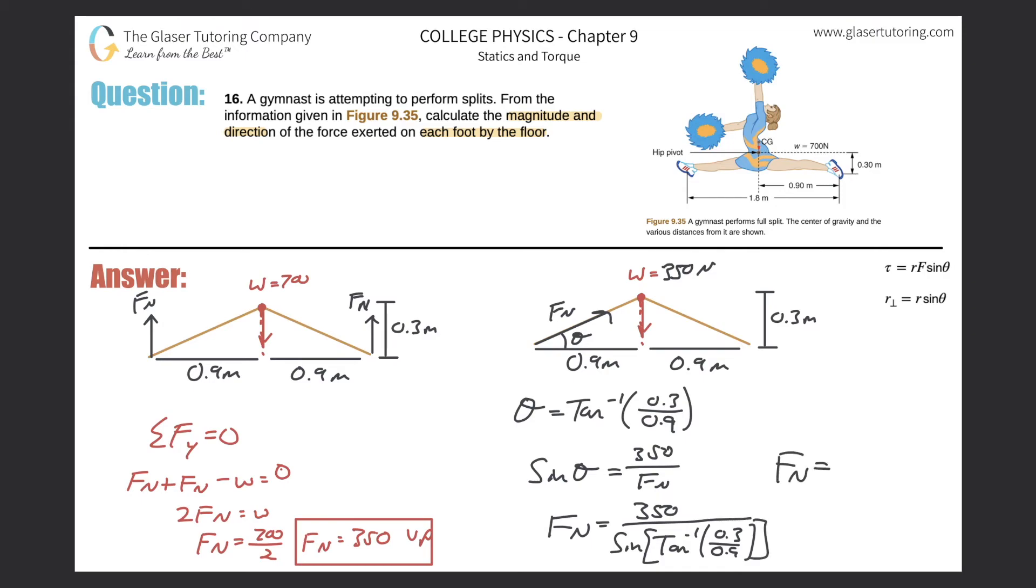And when we do that, we can get our answer there. So let's see what that is now. So that being the case, so we have 350 divided by parentheses, sine, and then of the inverse tangent of 0.3 over 0.9, and we get a value of, I'm going to round 1.11 times 10 raised to the third newtons. So that would be the force then if the floor is acting parallel to the leg.